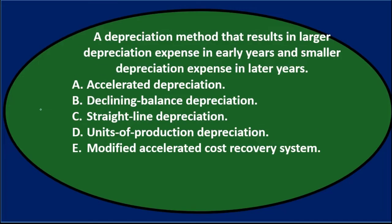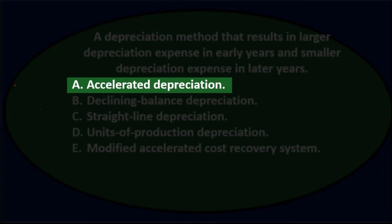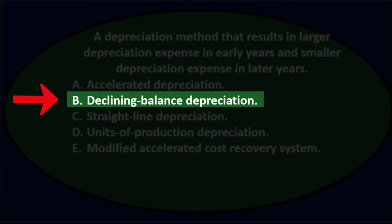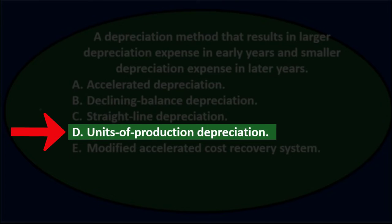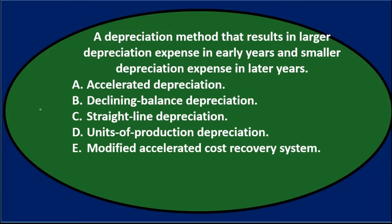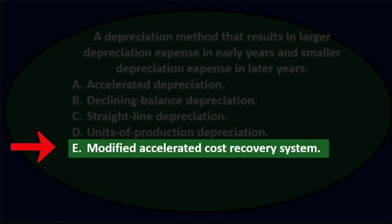Next question: A depreciation method that results in larger depreciation expense in early years and smaller depreciation expense in later years. A. Accelerated depreciation. B. Declining balance depreciation. C. Straight line depreciation. D. Units of production depreciation. And E. Modified accelerated cost recovery system.